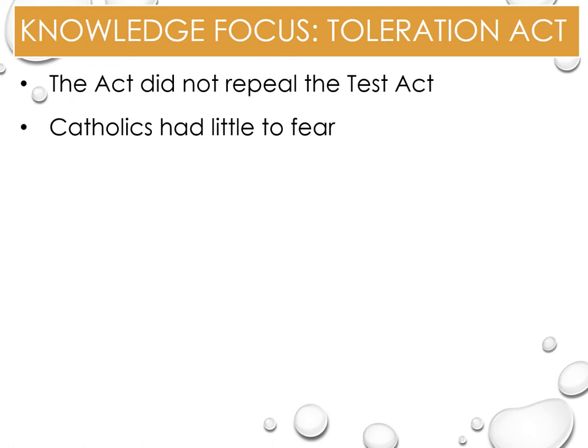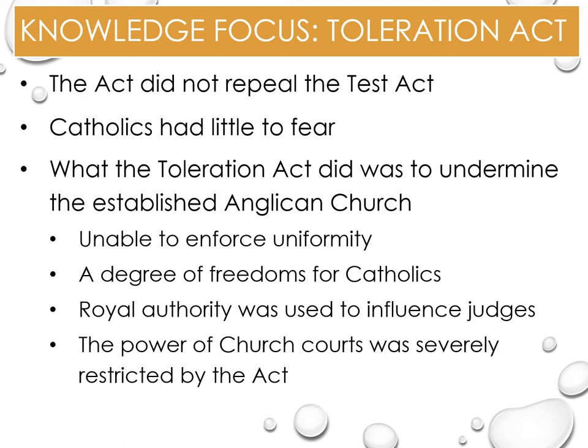The Act and events of 1688 to 1689 undermined the established Anglican Church in a number of ways and the role of religion was also reduced. It was now an accepted fact the Church of England was unable to enforce uniformity and had to accept dissenters. As a result, the population by 1714 was made up of nearly 8% of dissenters. Catholics, despite being excluded from the Act, had a reasonable degree of freedom, even so much as to participate in mass without trouble.